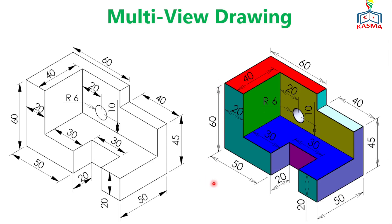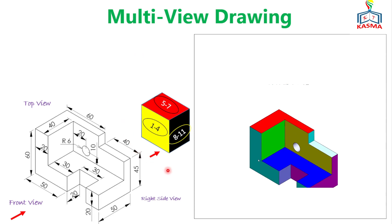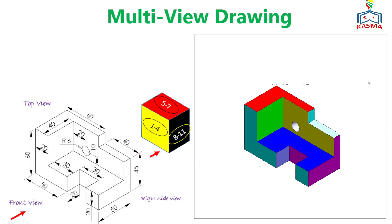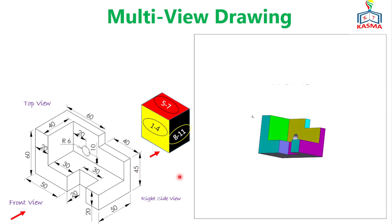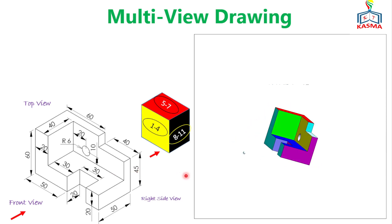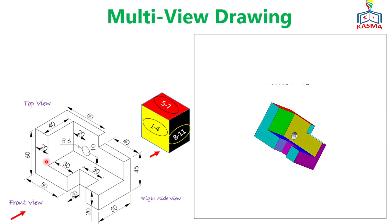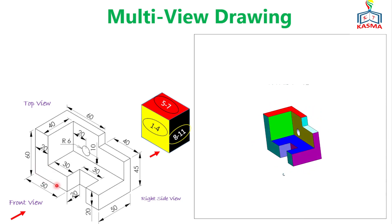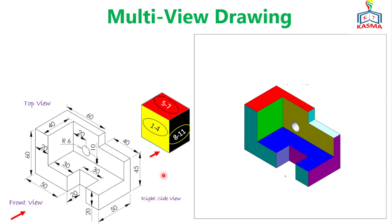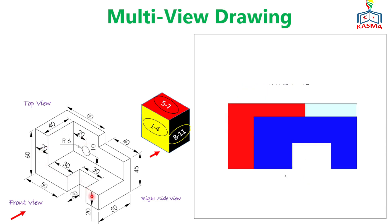In this video we'll see the multi-view drawings of this object — how we could easily construct the views. This is the given object as a 3D or isometric view with its own layout; all detailed dimensions are given in millimeters. If such types of objects are given to you to be projected in a multi-view drawing, how to construct it will be discussed here in detail.